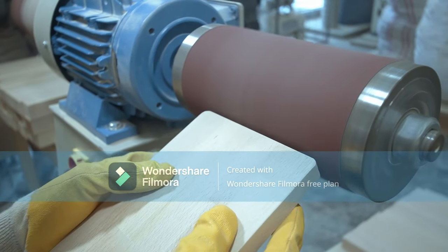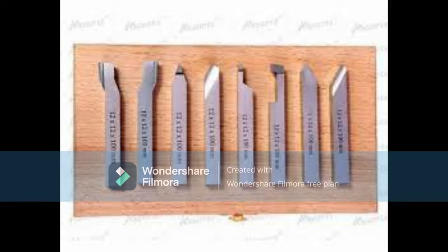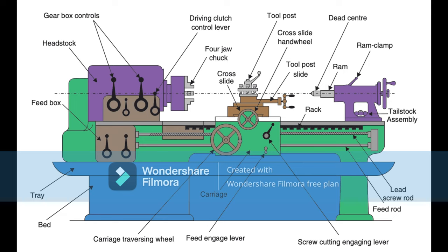Engine lathes have a large bed and a headstock that houses the motor and drive system. The tailstock is at the opposite end of the bed and supports the other end of the workpiece. The main components include the bed, headstock, tailstock, cutting tool, carriage — which holds the cutting tool and moves along the bed — the cross slide, which allows the cutting tool to move perpendicular to the bed, and the lead screw, which converts rotary motion from the headstock into linear motion for the carriage and cross slide.